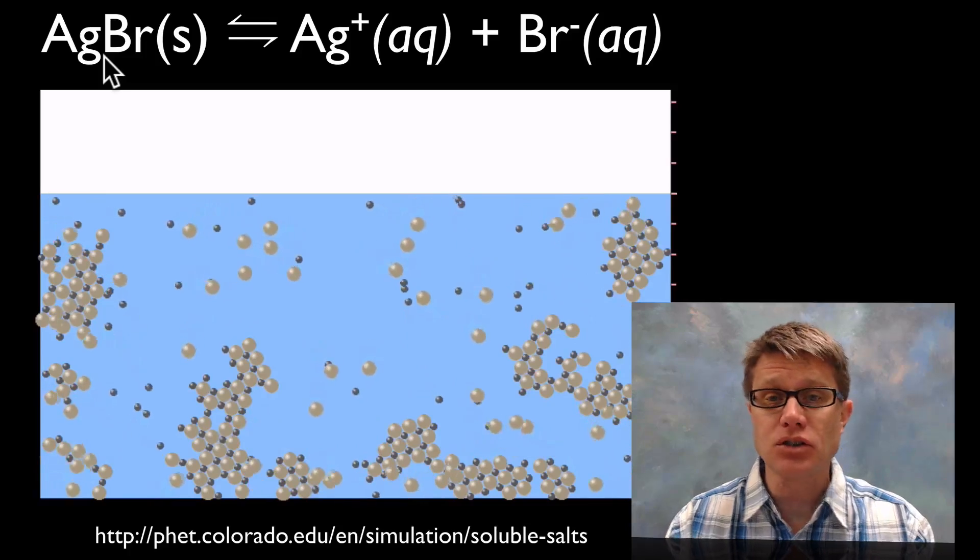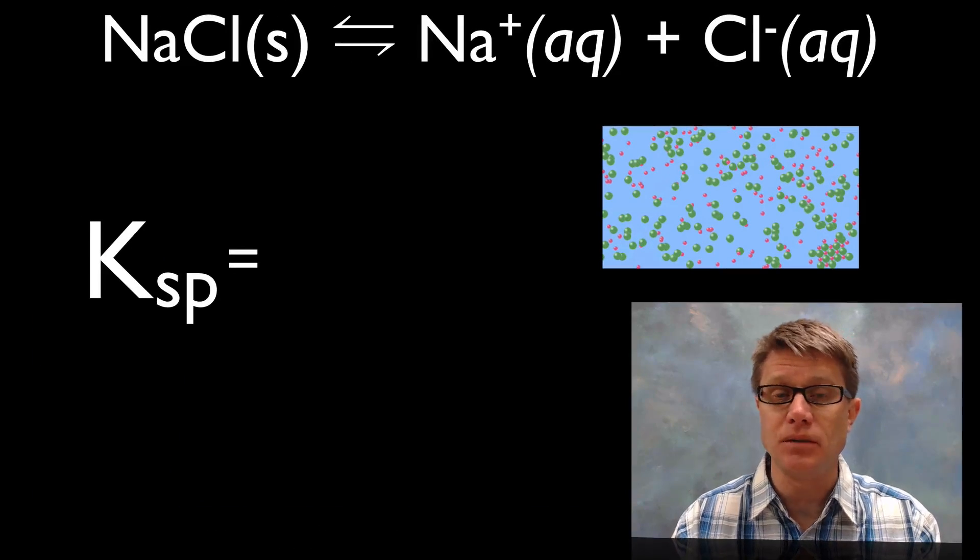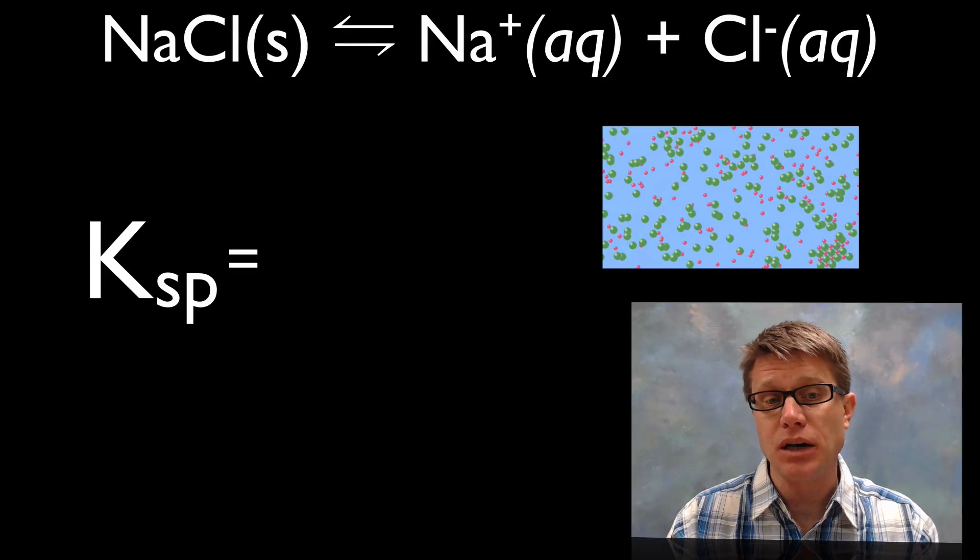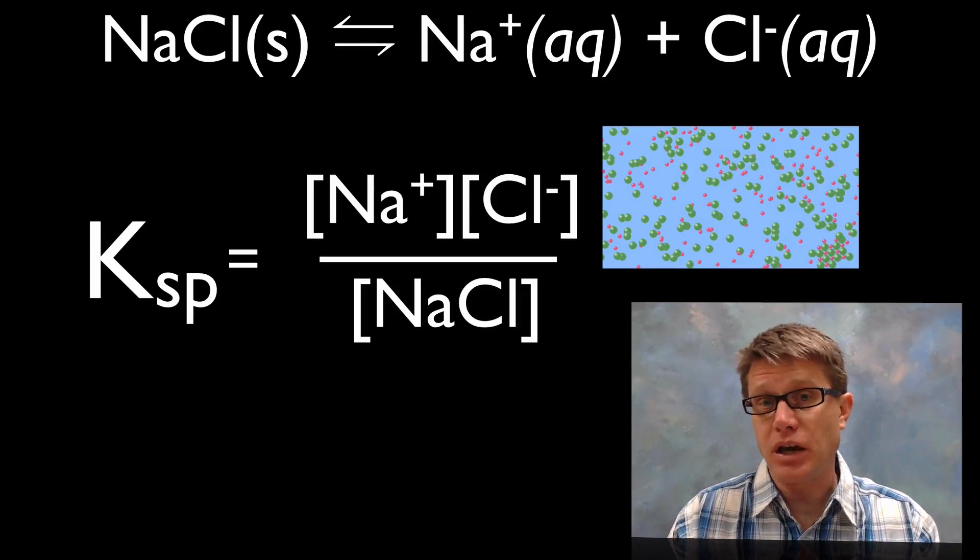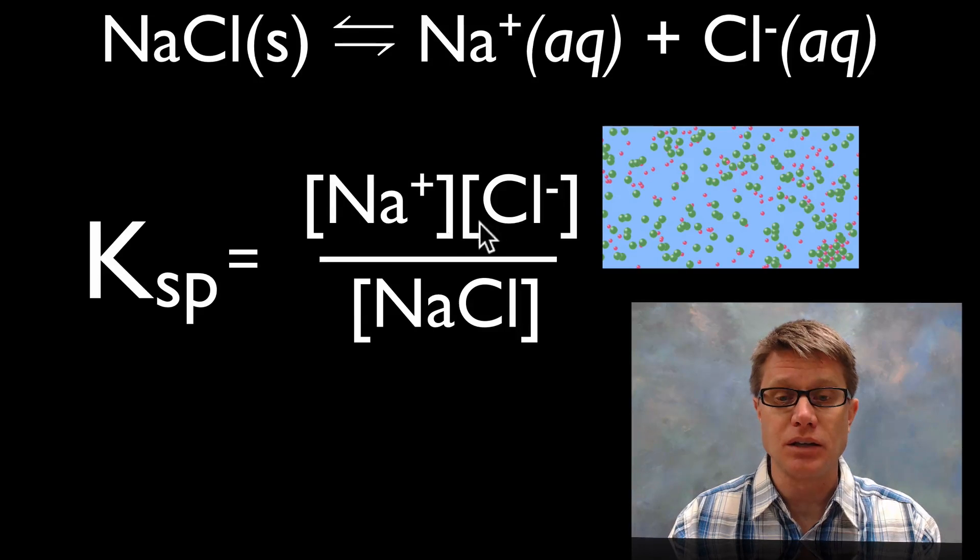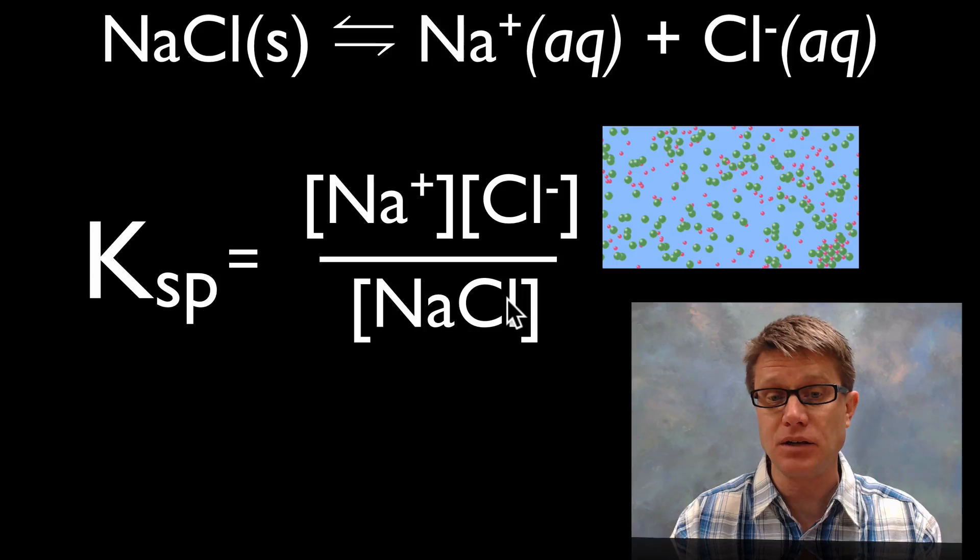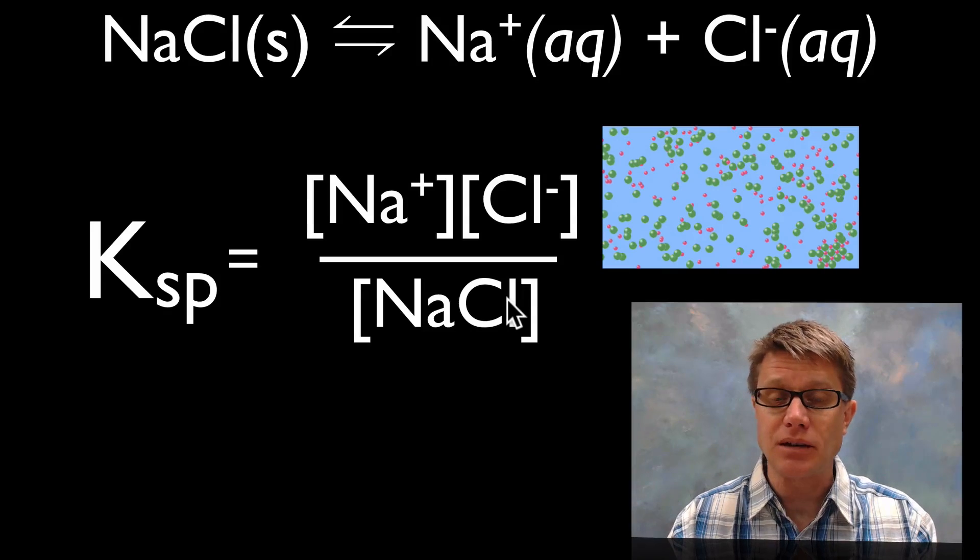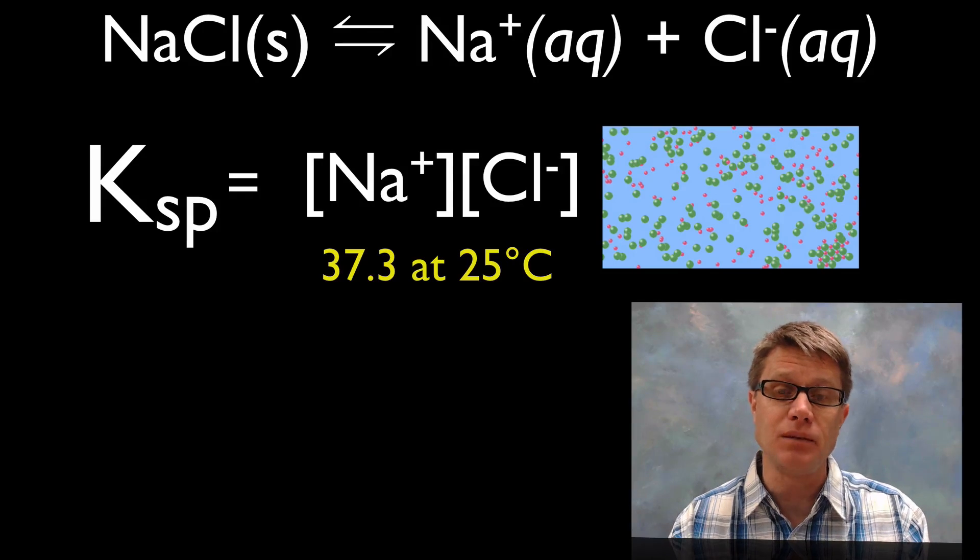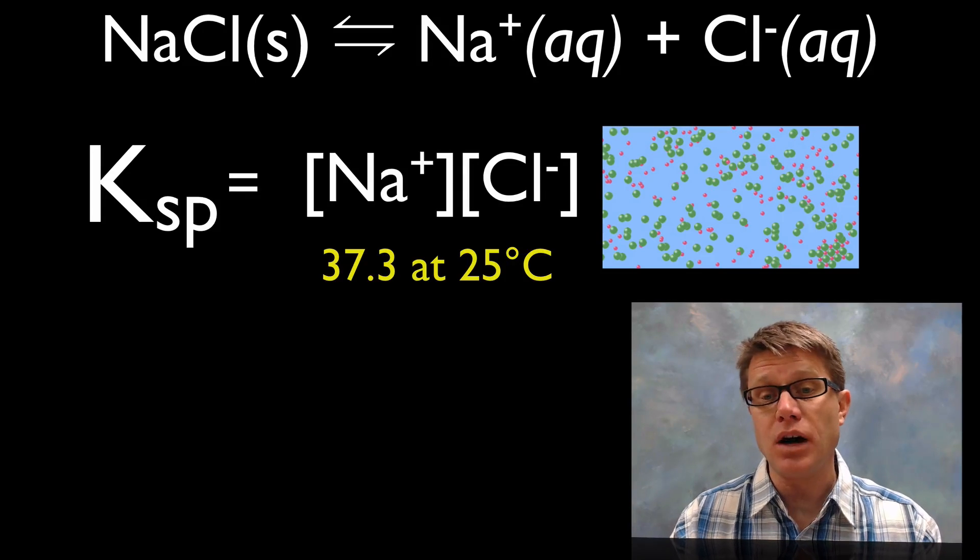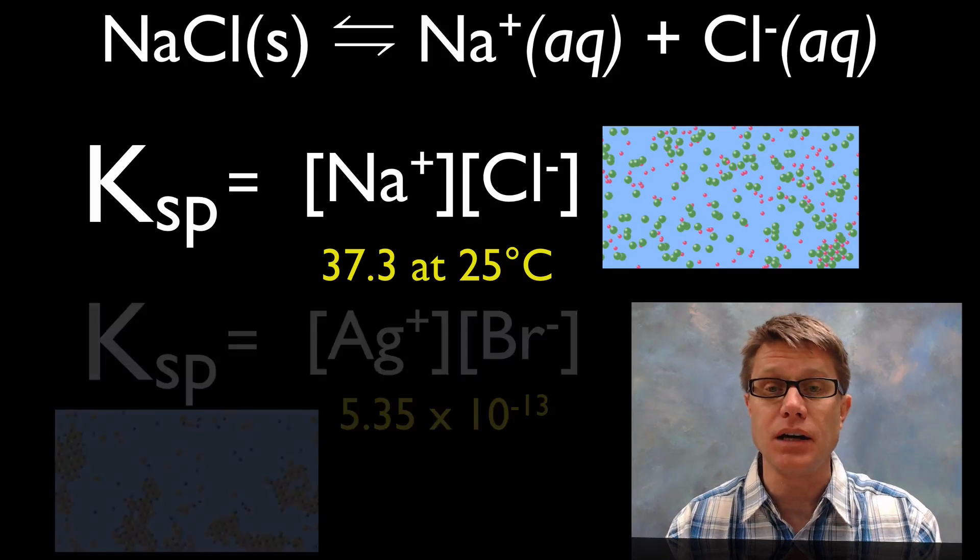And so how do we measure does a reaction go to the right or does it go to the left? Remember that's going to be our equilibrium constant. And so if we were to look at the equilibrium constant of sodium chloride being dissolved in water we could set it up like this where it's going to be the concentration remember of the two products over the concentration of that reactant. Now we can get rid of that reactant since it's a solid. So our Ksp value is going to be 37.3. What does that mean? Since it's much greater than 1 that's going to shift it way towards the right. We're going to have way more of those ions.